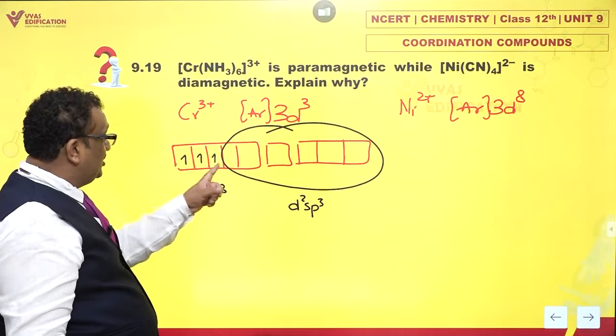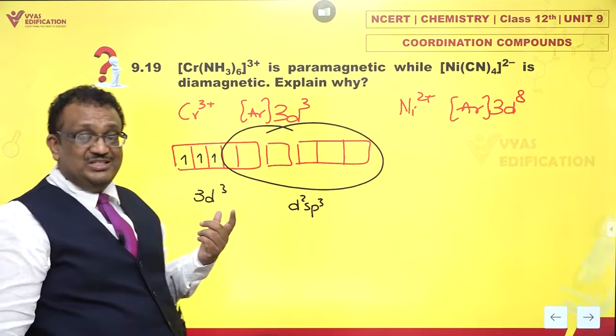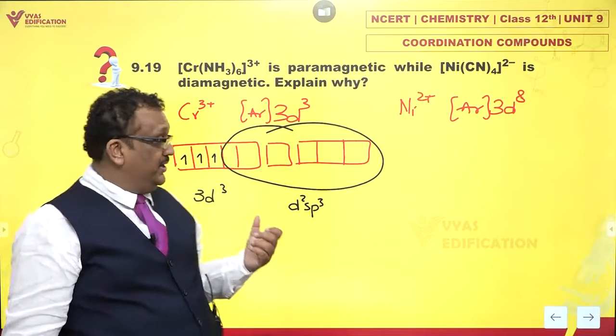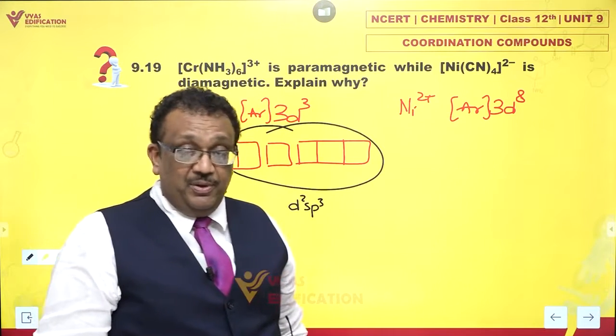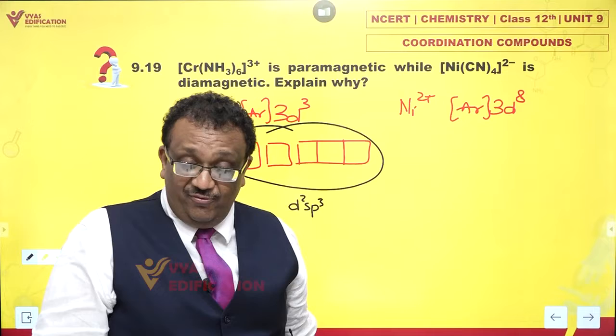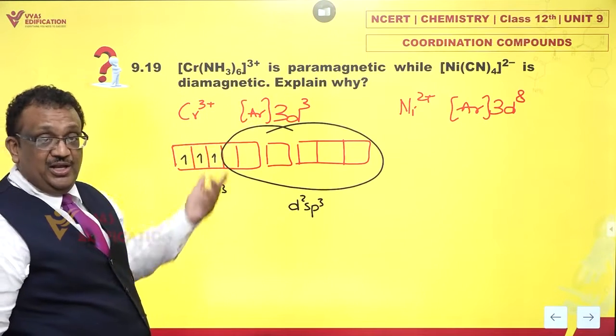That means these 3 electrons will always stay the way they are. Yes, they will. That means the overall complex would have 3 unpaired electrons on chromium. That means paramagnetic? Yes.